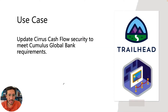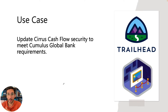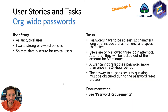For this unit, I wrote that the use case is to update Serious Cashflow security to meet Cumulus Global Bank requirements. If you think about all of the things that we're doing, it really just boils down to that one sentence. It's a great skill to have, and it's particularly important when you're working with business leaders and other team members and they ask what you're working on — they want the big picture answer. So always keep that in mind: have a big picture answer ready to explain what you're doing.